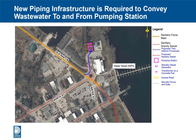New piping infrastructure is required to convey wastewater to and from the pumping station. The existing sanitary force mains are located on Old Rail Lane and connect to the existing Water Street station, as shown in orange hatched lines. Twin 400 mm diameter force mains are proposed to connect the new pumping station to the existing force mains. An inlet sanitary sewer will connect the existing maintenance hole upstream of the current station on Water Street to the new pumping station wetwell, outlined in red hatched lines. The station will also include a standby generator and transformer outside the building, a new access road, and a gate and fence around the property.